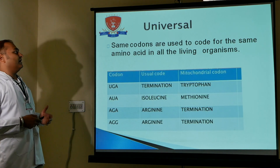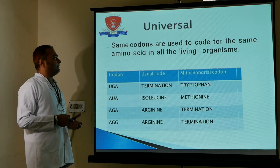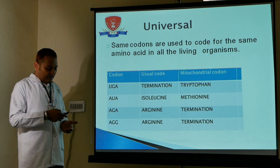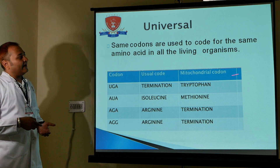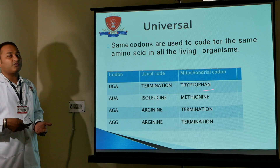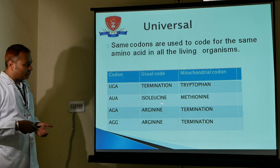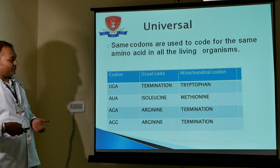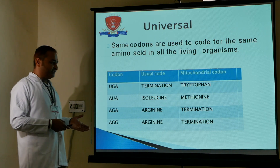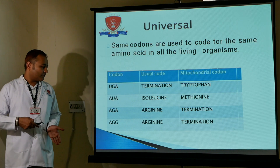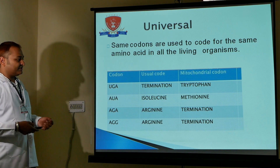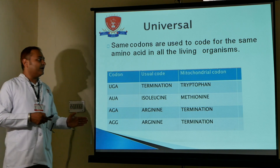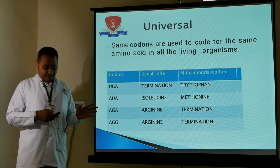Universal means some codons are used to code for the same amino acid in all living organisms. However, exceptions exist: UAG is usually a termination codon, but in mitochondria it codes for tryptophan. AUC codes for isoleucine, but in mitochondria for methionine. AGA is arginine in general, but a termination codon in mitochondria.